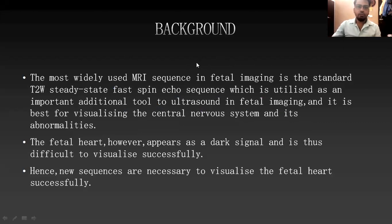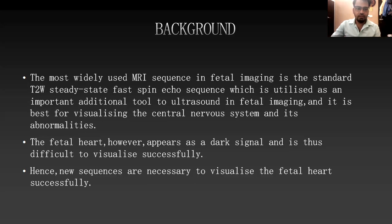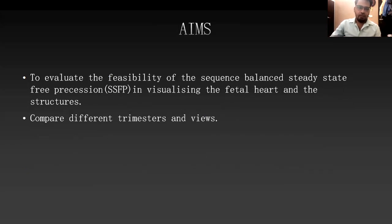The most widely used MRI sequences in fetal imaging are standard T2-weighted steady state fast spin sequences, which are utilized as an additional tool to ultrasound in fetal imaging. These are best for visualizing the central nervous system and its abnormalities. The fetal heart, however, appears as a single dark signal and is thus difficult to visualize successfully.